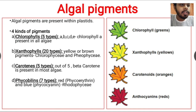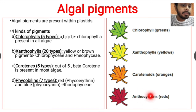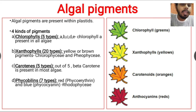Here we can see that chlorophyll gives the green color, xanthophyll gives the yellow color, carotenoids give the orange color, and anthocyanin gives the red color. So these are all the algal pigments. Thank you for watching this video.